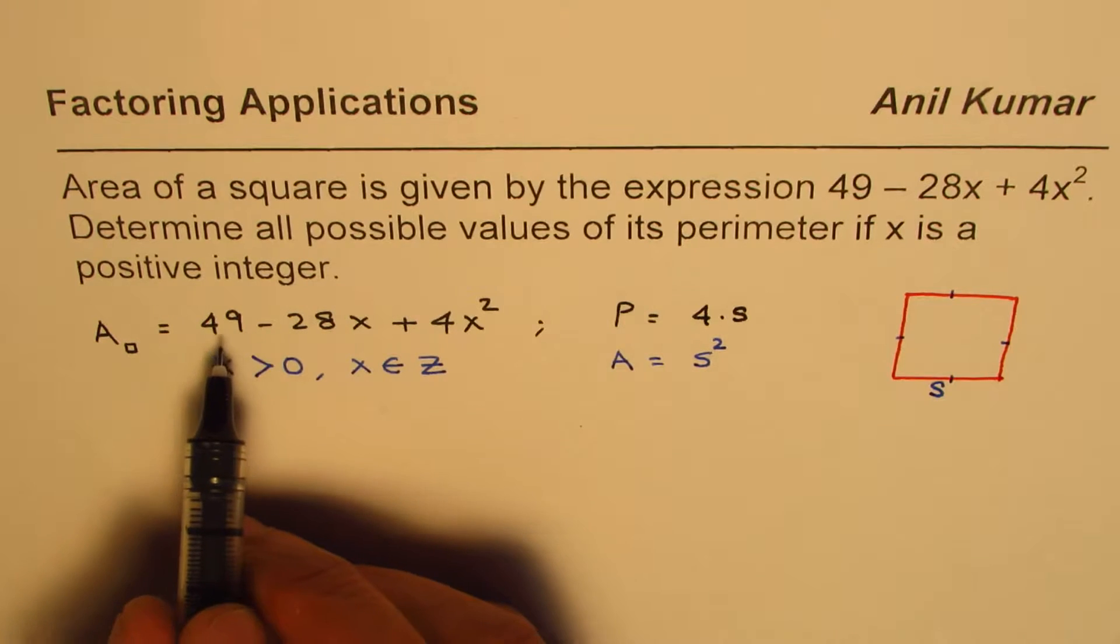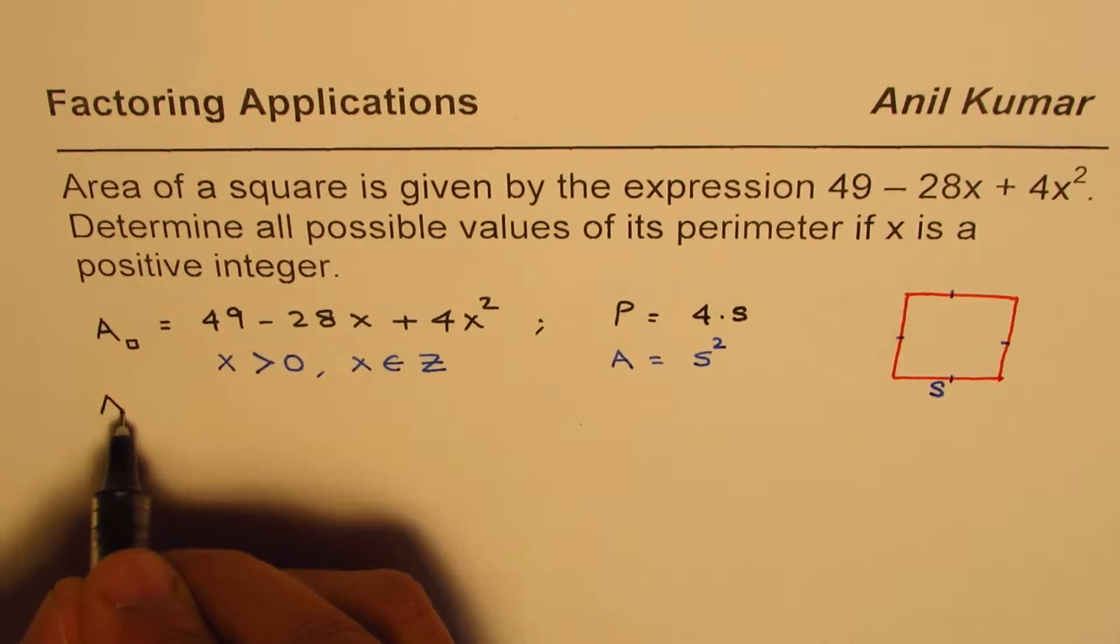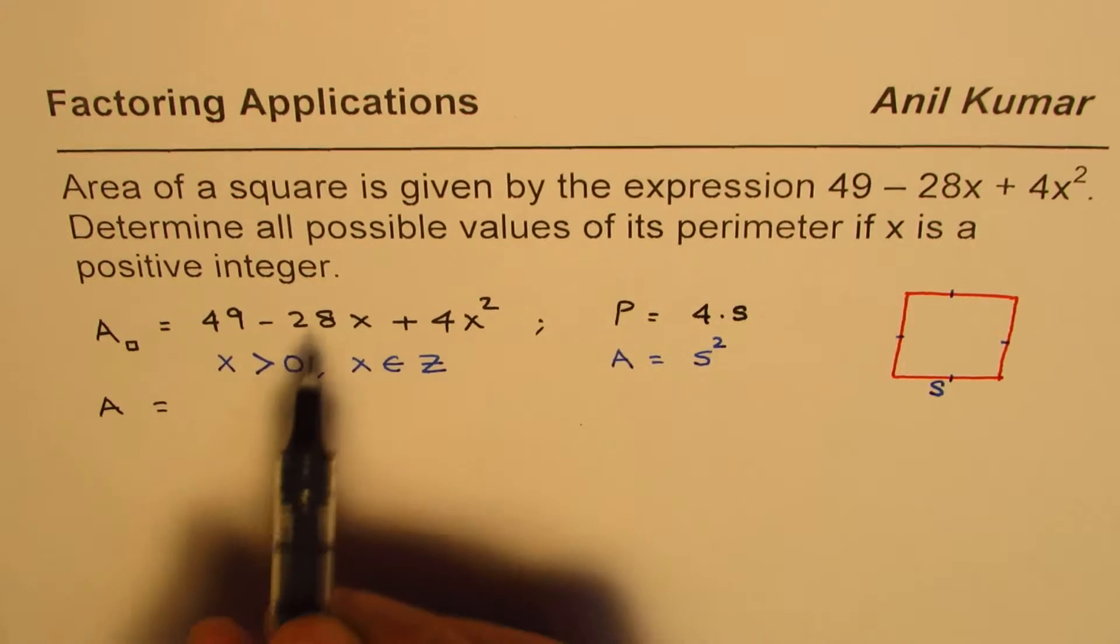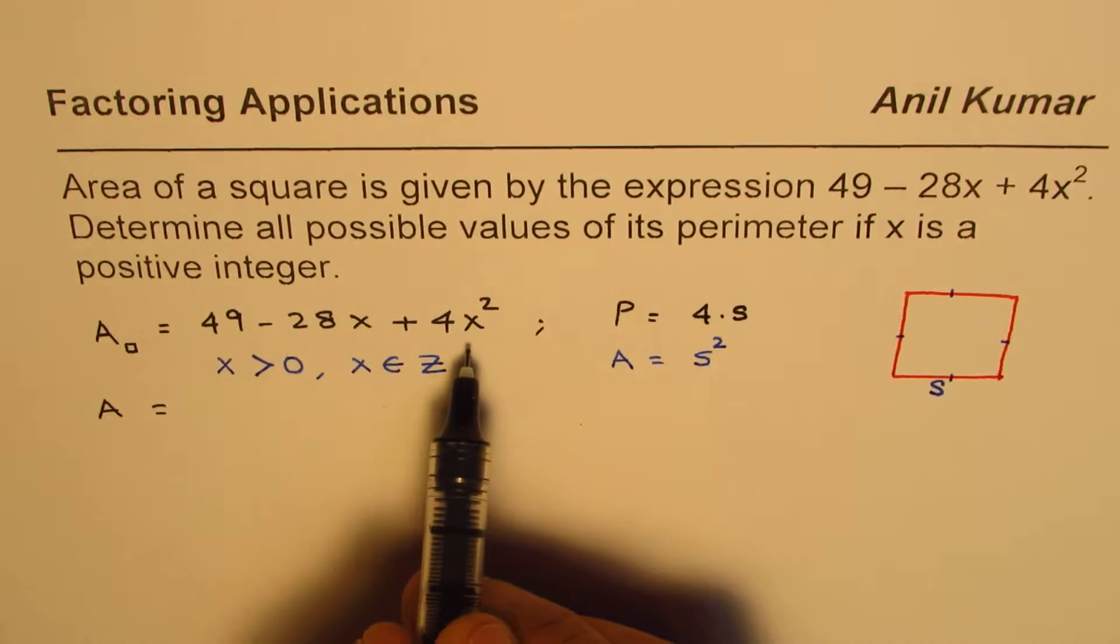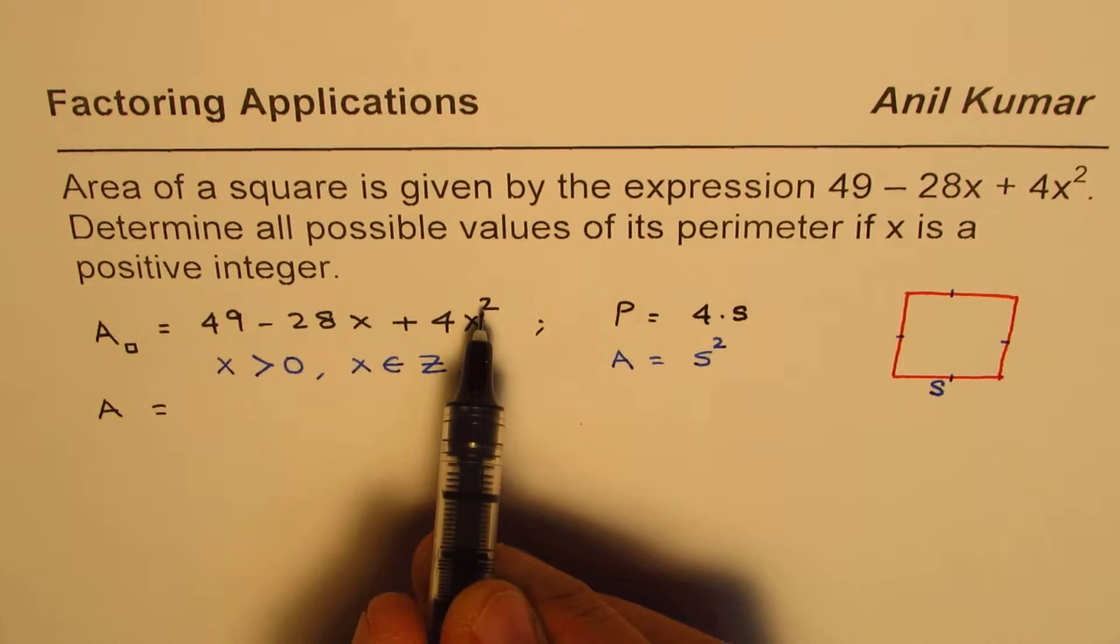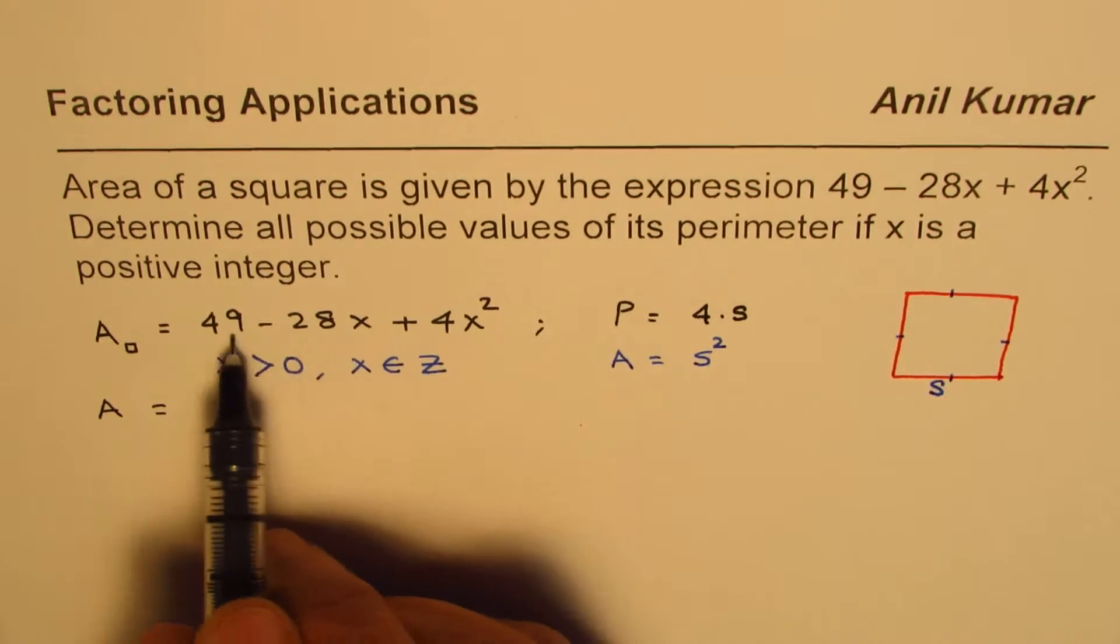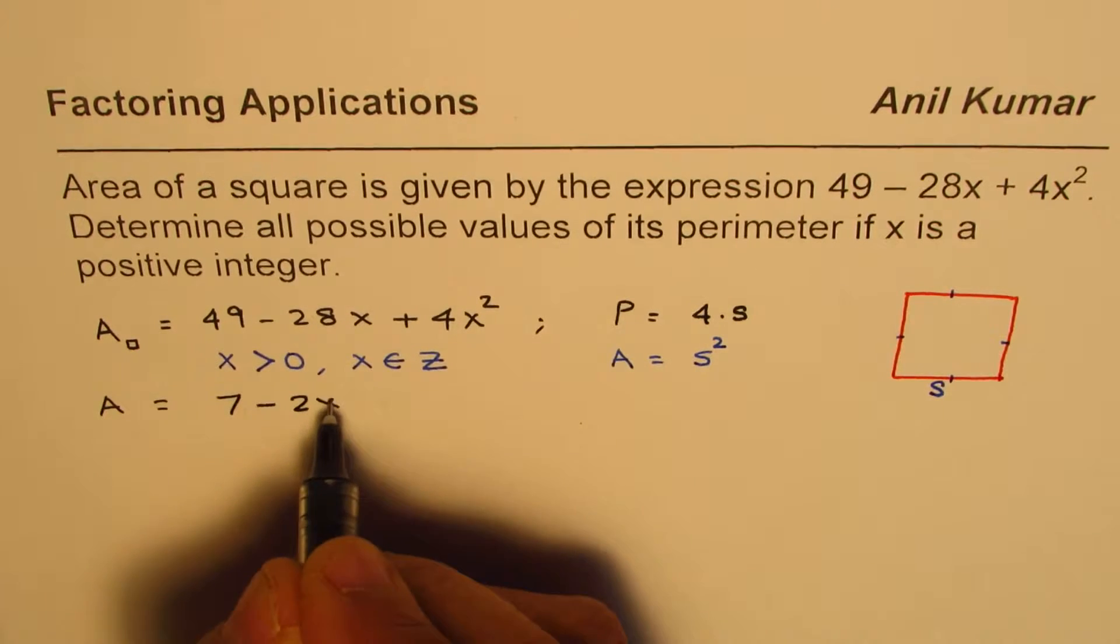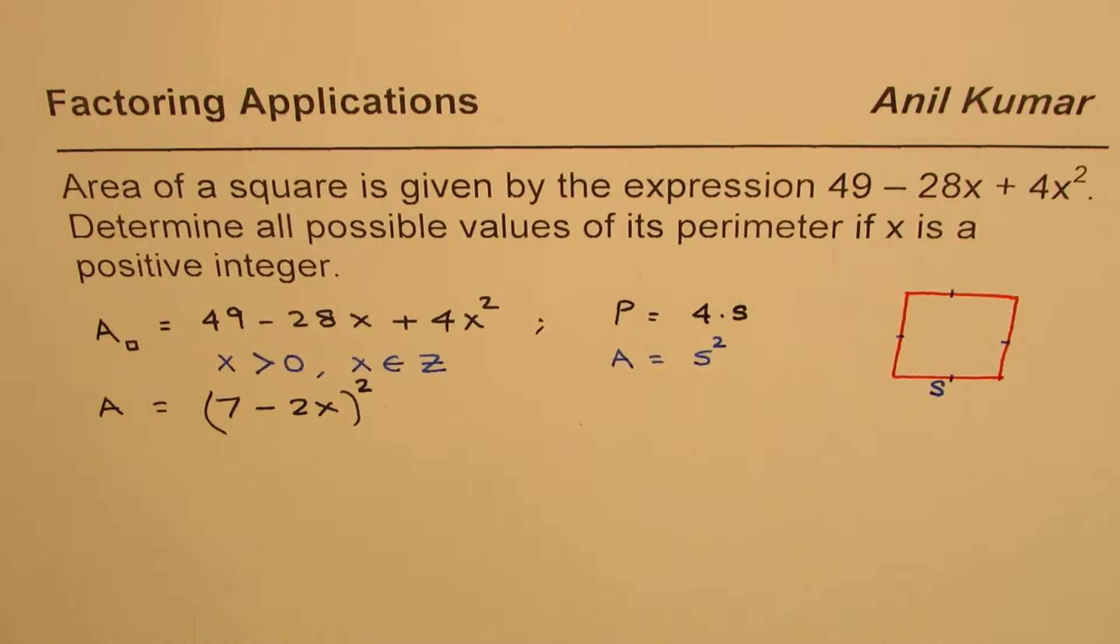Now let us see the factored form of this trinomial: area equals 49 minus 28x plus 4x squared. 49 is 7 squared and 4x squared can be written as 2x whole squared, and this becomes twice 7 and 2x. So we could factor this as 7 minus 2x whole squared.